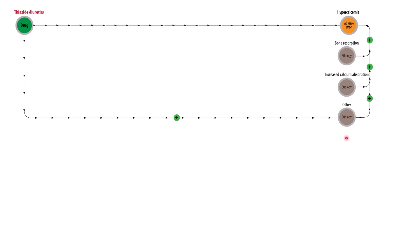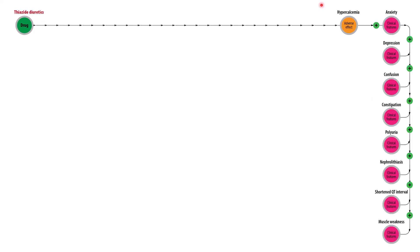In addition to the causes of hypercalcemia, it's important to understand the clinical features. There are a whole host of different clinical features: anxiety, depression, and confusion — which are neurological or psychological effects — constipation, polyuria, nephrolithiasis, shortened QT interval, and muscle weakness. Any individual clinical feature cannot be used by itself to diagnose hypercalcemia because they're not specific to hypercalcemia.